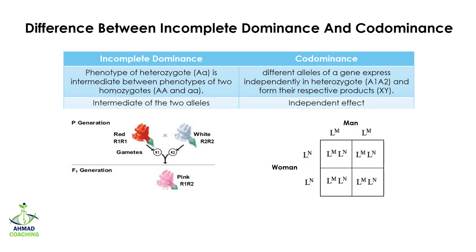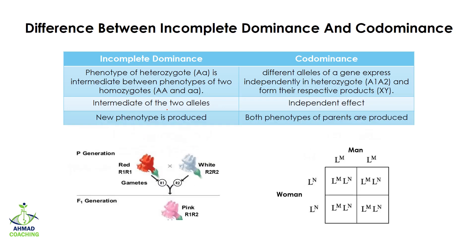In case of incomplete dominance, the phenotype is intermediate of the two alleles, while in case of co-dominance, the independent effect is studied — the alleles are not interfering with each other but expressing independently. In incomplete dominance, a new phenotype is produced: we had red flower and white flower, but due to incomplete dominance a new phenotype, pink, appears.